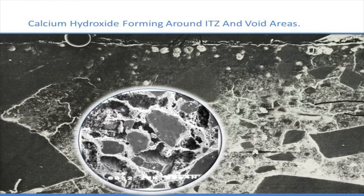That is actually calculated and depended on by engineers when they're figuring out structural properties of cement. All around that, you have the calcium silicate hydrates — the much harder, denser product. The bigger picture is a cross-section of pool plaster, and you can see large chunks of aggregate with a little white line around it. That white line is an ITZ, again filled with calcium hydroxide.